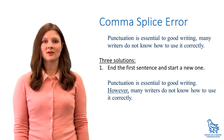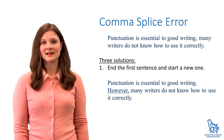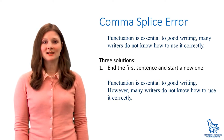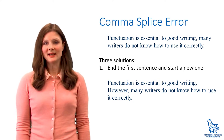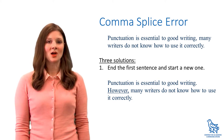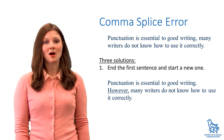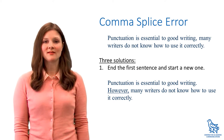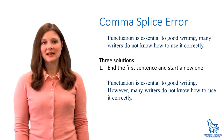First, you can end the first sentence and start a new one. As we learned in strong sentences, the average sentence length for academic writing is under 25 words. If your splice sentence is much longer than that, then splitting it into two sentences might be a good option. Don't forget to include a conjunctive adverb like 'however' or 'therefore' if you need to show how your ideas are connected.